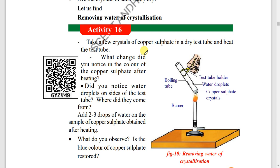Next, crystallization — a very simple activity. Using a Bunsen burner with a test tube, copper sulfate crystals are observed.